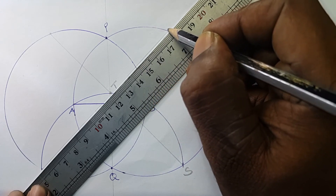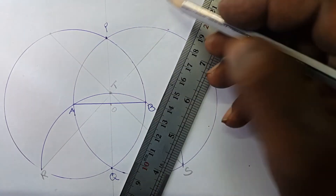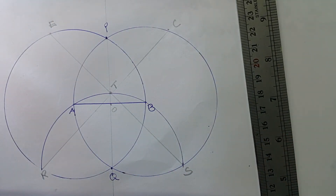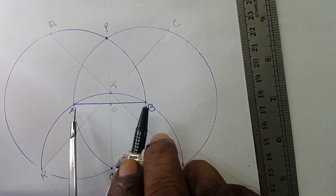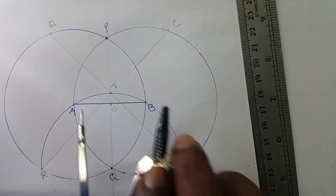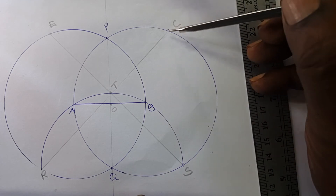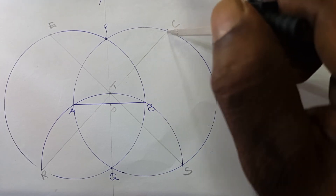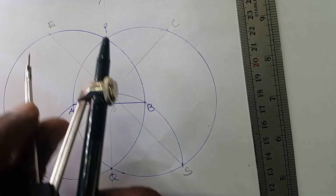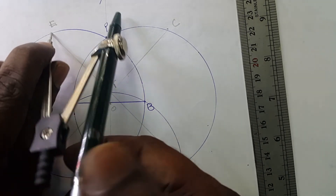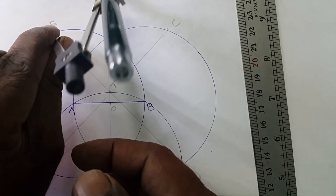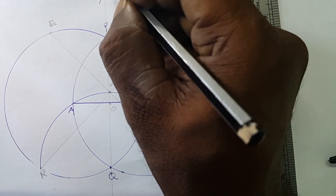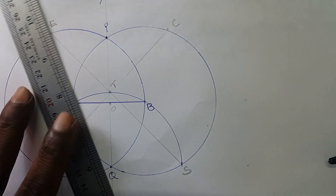These two points are marked as C and E. Again, take your compass, set a 50mm radius, and with C as center draw an arc. Similarly, reset the compass point on E at the same radius and draw another arc. Those arcs intersect here, and this point is called D.